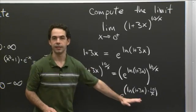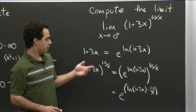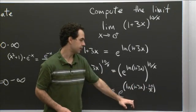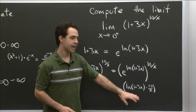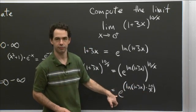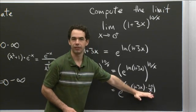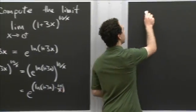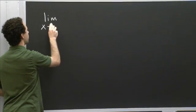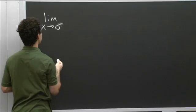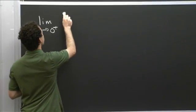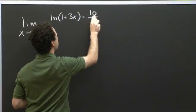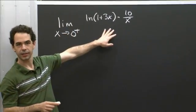Our original expression equals this, so the limit of our original expression equals the limit of this one. Because exponentiation is a nice continuous function, in order to compute the limit of this expression, since e is a constant, it suffices to compute the limit of the exponent. So let's compute the limit as x goes to 0 from the right of ln(1 plus 3x) times 10 over x. This is a product, and there's an obvious way to rewrite it as a quotient. It's an indeterminate product: as x goes to 0, ln(1 plus 3x) goes to ln(1) which is 0, whereas 10 over x goes to positive infinity since we're coming from the right. So this is a 0 times positive infinity form.